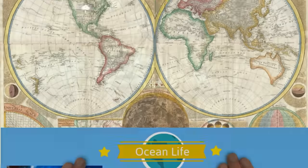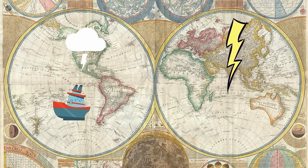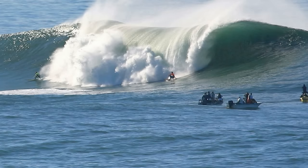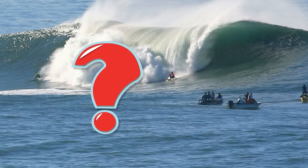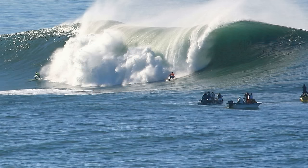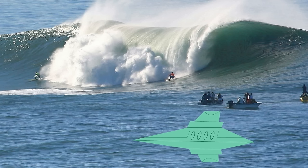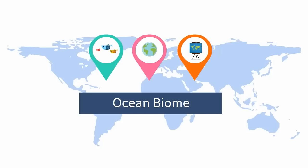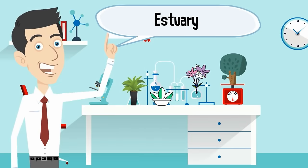The ocean impacts our weather and has been used for years as trade routes. We play on the beaches of oceans and wonder what can be found in the deep trenches like the Mariana Trench, which is 32,000 feet deep. Although we are fascinated with the ocean, we have only explored about 5% of it. So there you have a quick overview of our most diverse and largest biome on Earth.